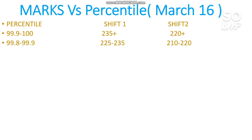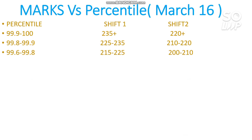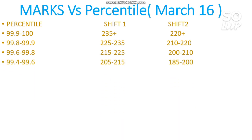For 99.8 to 99.9 percentile you need to score 225 to 235 for Shift 1, and 210 to 220 for Shift 2. For 99.6 to 99.8 percentile you need to score 215 to 225 for Shift 1 and 200 to 210 for Shift 2. For 99.4 to 99.6 percentile you need to score 205 to 215 for Shift 1 and 185 to 200 for Shift 2.